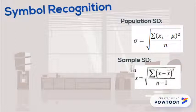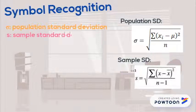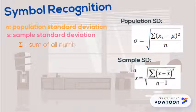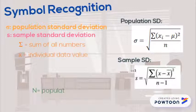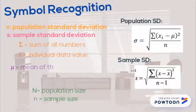As you can see, the sigma represents the population standard deviation, and the lowercase s is for the sample standard deviation. Sigma is the sum of all numbers. X is the individual data value. A capital N represents the population size. A lowercase n represents the sample size. Mu is the mean of the population, and X-bar is the mean of the sample.